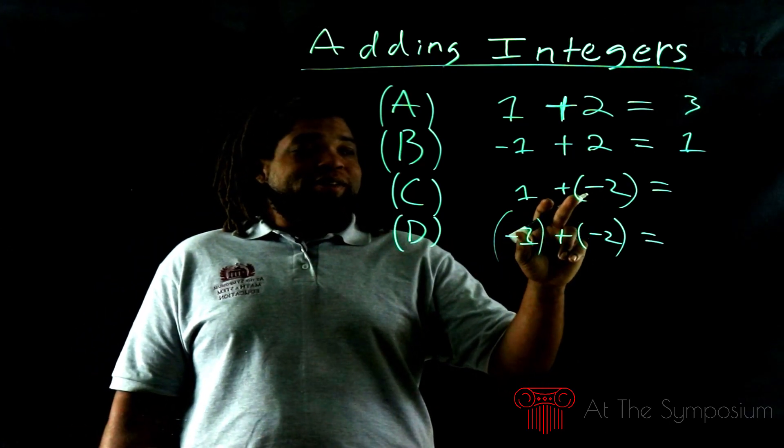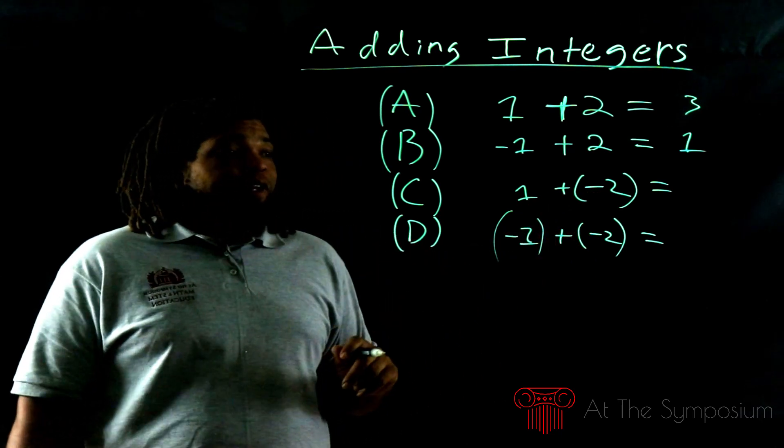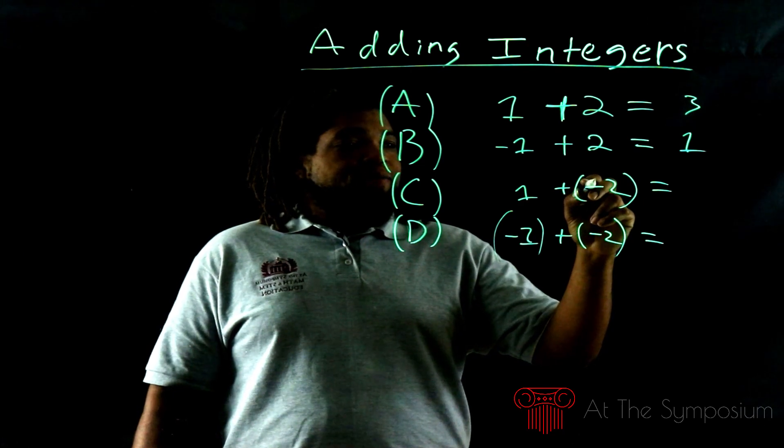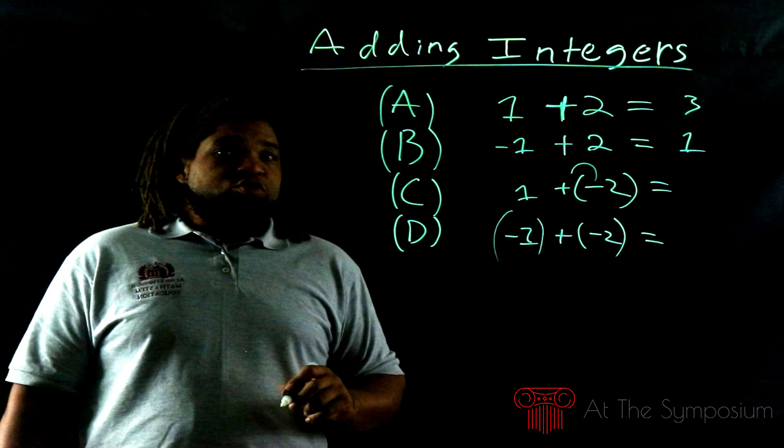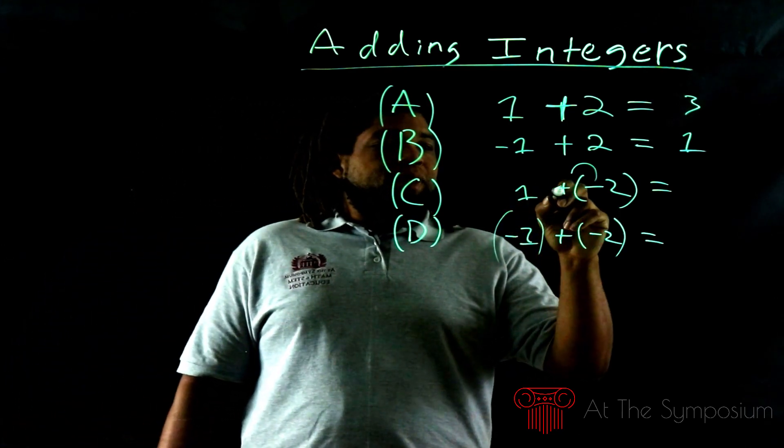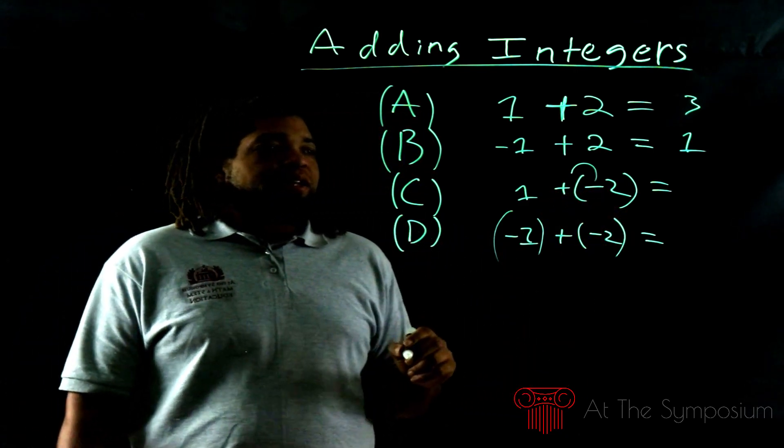The reason why the parentheses are there is because we have two signs - a positive sign and negative sign close to each other. If we've crossed this bridge yet or remember this or have been exposed to this, we know that the negative sign trumps the positive sign. So 1 + (-2) really is 1 - 2.